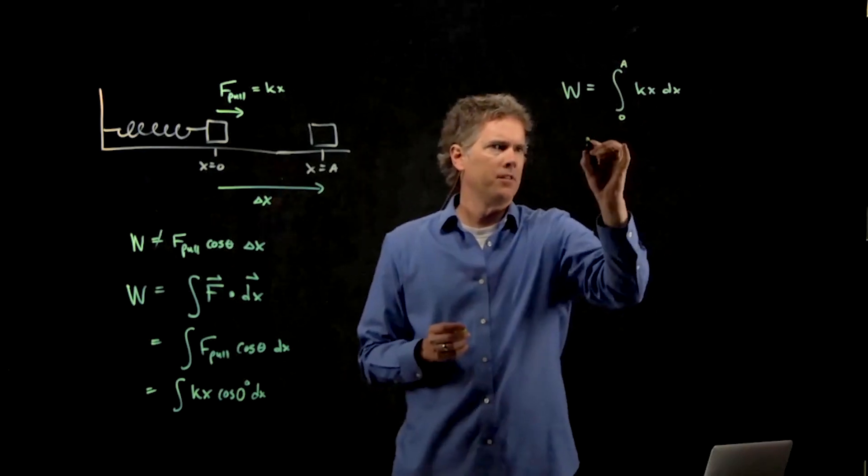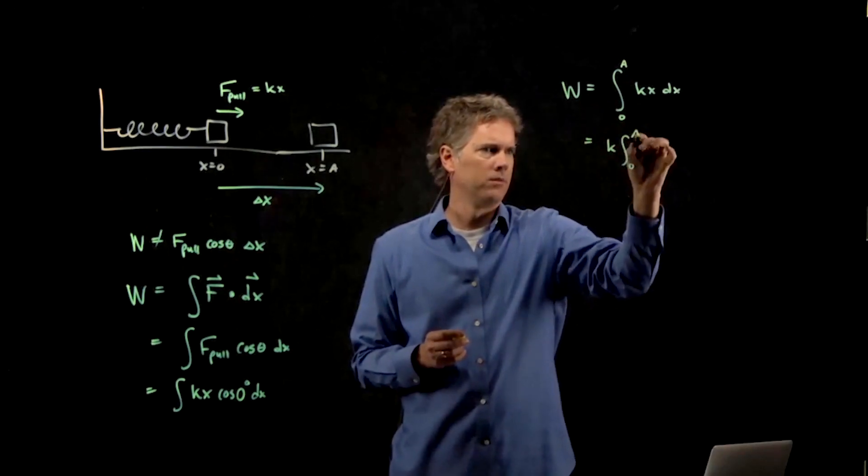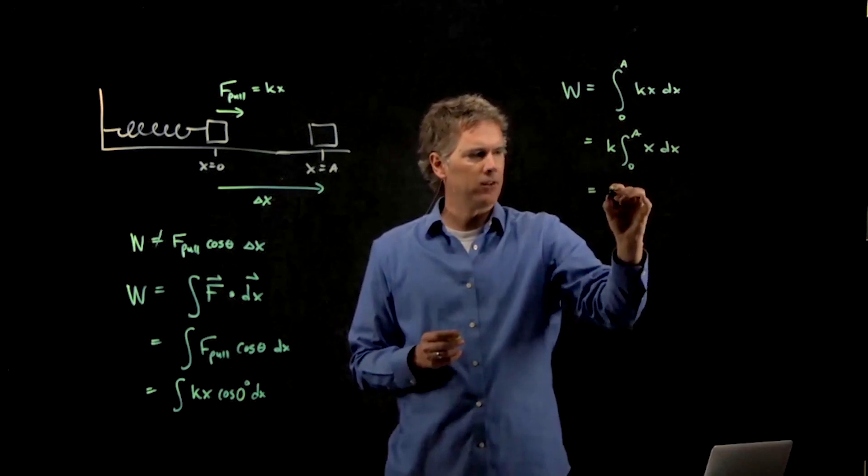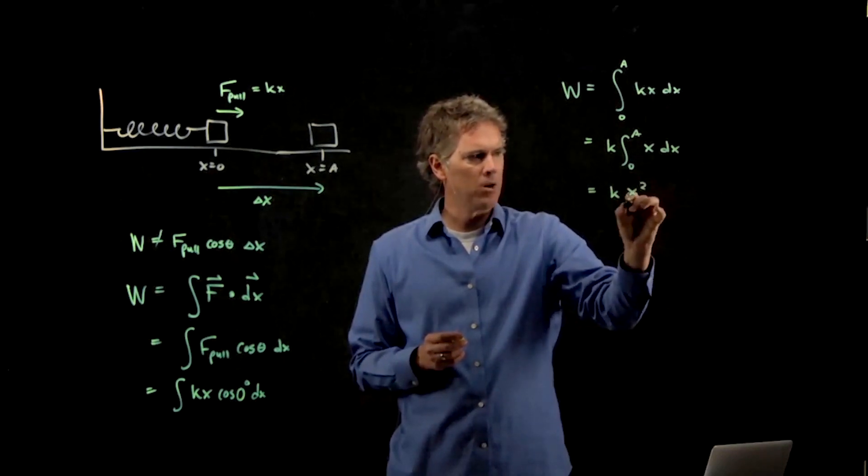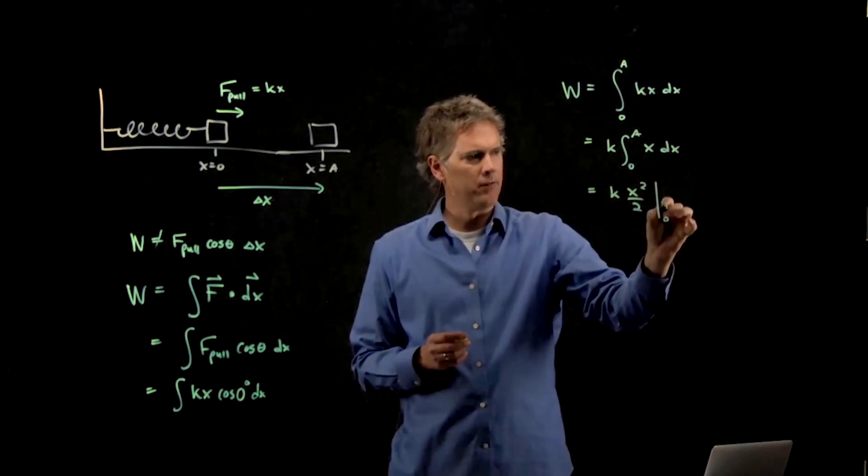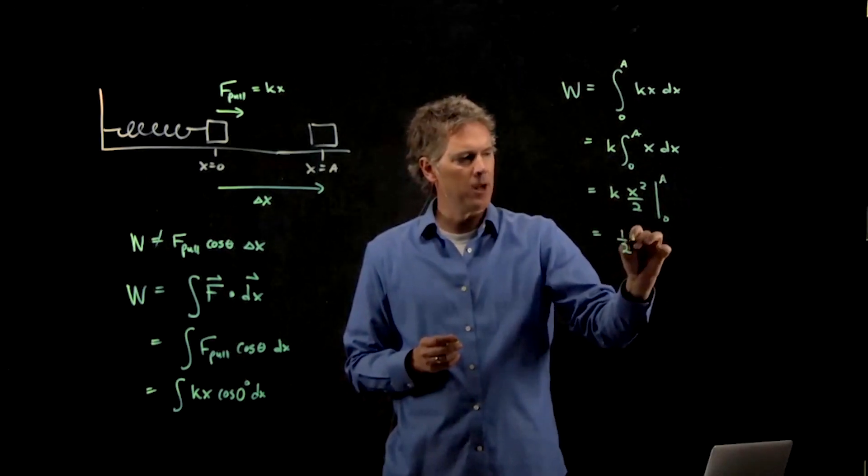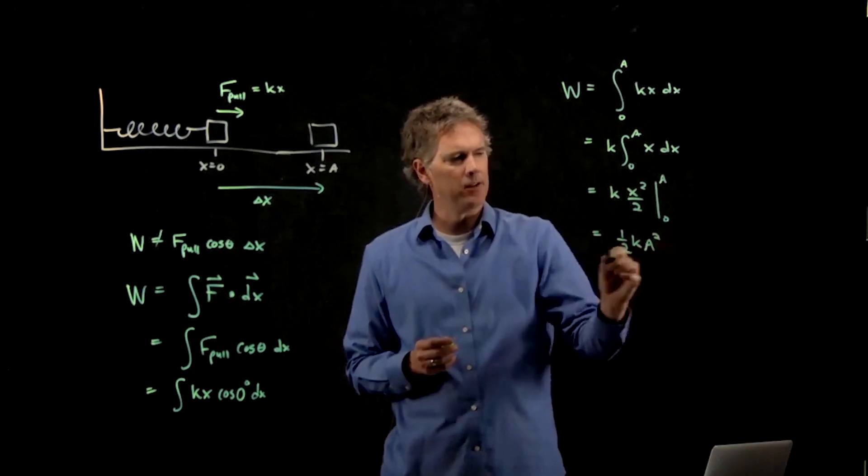k is a constant, so that comes out in front of the integral. We know how to integrate x dx. We just get x squared over 2. We're going to evaluate that between 0 and a. The 0 is going to go away. And we just get 1 half k a squared.